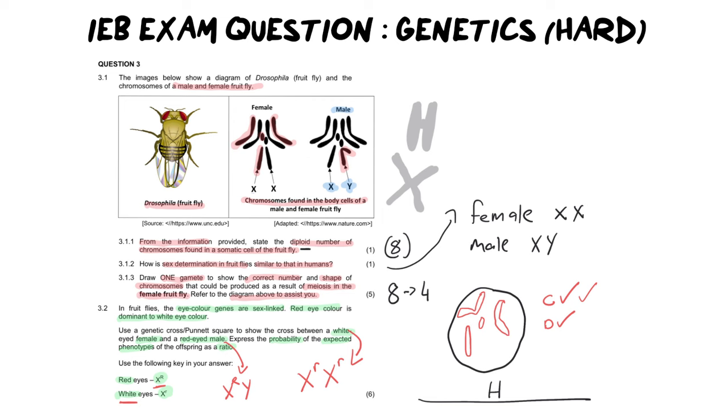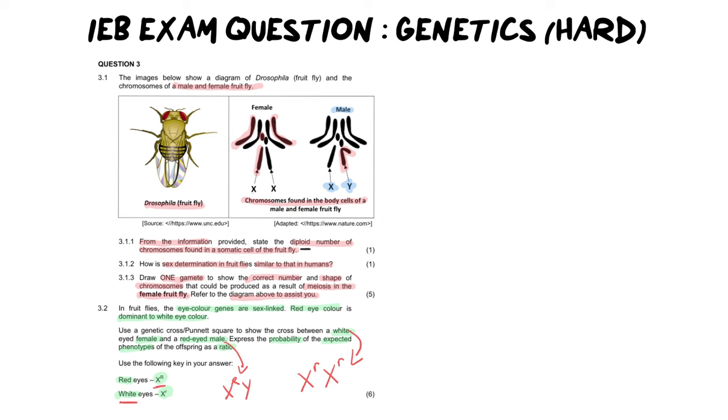Now what we need to do is take those genotypes and we're going to put them into a genetic cross. Now, different schools teach different things, but I firmly believe that there is the best way, is my way, to lay out a Punnett square and a genetic cross so you get full marks. And this is how we're going to do it. So step one, in the margin, we're always going to put P1 and we are going to put our white-eyed female multiplied by our red-eyed male. And it's really important to put male and female because it's a sex cross. And we're going to put in their genotypes. That must be a capital R and our Y.